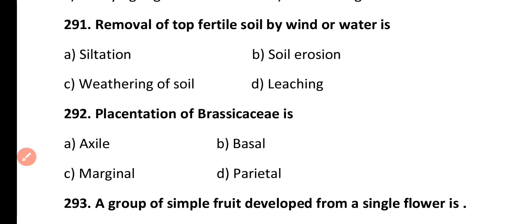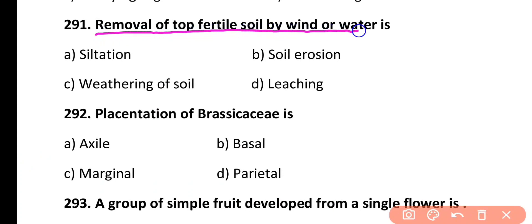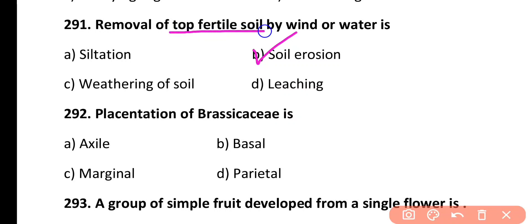Question 291. The removal of top fertile soil by wind or water is known as: siltation, soil erosion, withering of soil, or leaching. Correct answer is Option B. Soil erosion is the process of removal of fertile soil by wind or water.